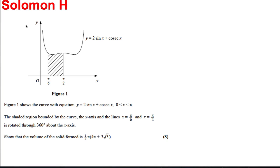Here's another question, the last in the series on integration. We've got the following curve and the shaded region between x equals pi by 6 and x equals pi by 2, rotated 360 degrees about the x-axis. Show the volume is the following.